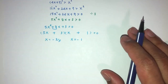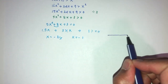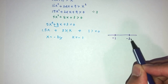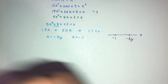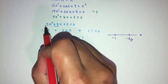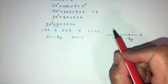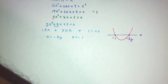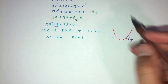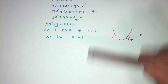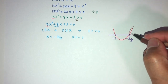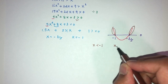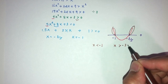Now let's simplify using a number line. This is −1, and this is −3/5, and this is 0. Because the coefficient is positive, we have a minimum curve. We want this to be greater than 0, so we look above the curve — that gives us x < −1 or x > −3/5.